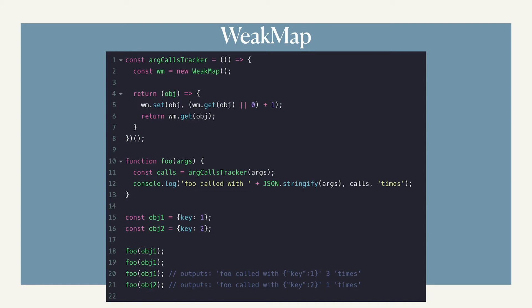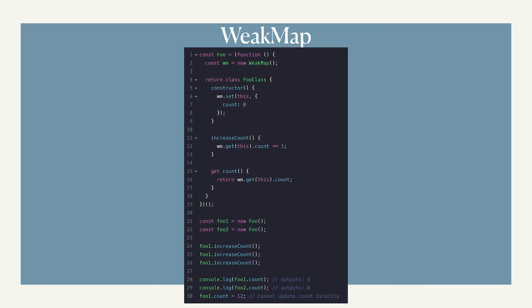This feature makes WeakMap perfect for certain jobs. For example, tracking — you can track any object like function arguments, rejected parameters, or certain object data without keeping it in memory when they are no longer in use. You can also use it to create private methods for classes by using the class instance as the key and the private object as the value. As long as the class instance is in use, these private objects exist — one is created for every instance of this class, making each instance unique and only the class holds the key reference. Therefore, nothing else can access this private object, and all instances are stored in the same WeakMap.